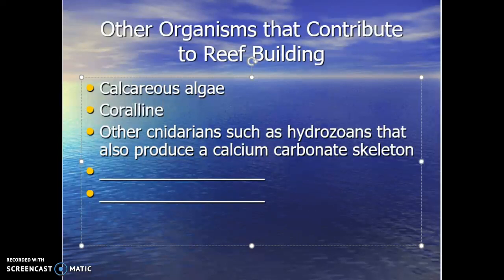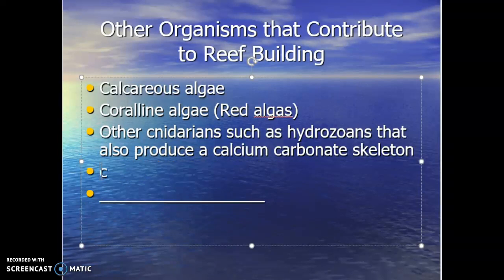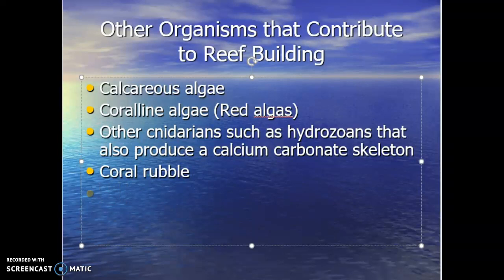Coralline algae — the red algae — is really, really important in reef formation because that coralline algae helps hold the reef together and binds it. Sometimes we also see hydrozoans, which help hold parts of the reef together because they also produce a calcium carbonate skeleton. Coral rubble itself — old coral that has died and broken down into chunks of limestone — sometimes helps build and solidify reef formation.